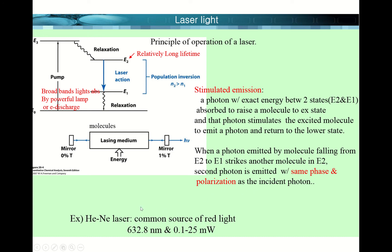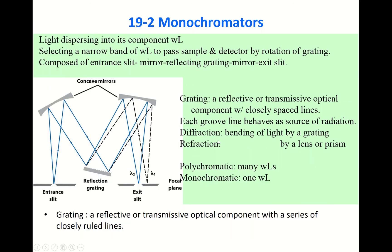To generate a laser beam you need specific energy states. Many different lasers have been developed. The helium-neon laser, for example, is a very common source of red light because it generates monochromatic light at 632.8 nanometers, with a power of 0.1 to 25 milliwatts.